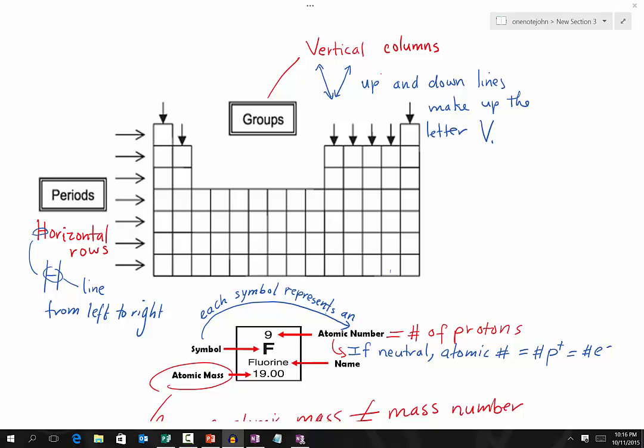In this lesson, we are going to look at the properties of a Periodic Table. So first of all, if you look at the Periodic Table, there are two important things. One of them is called the Periods.